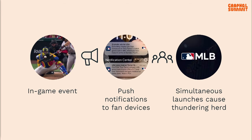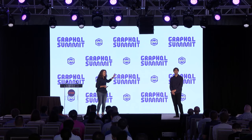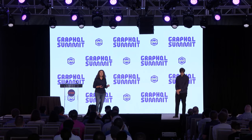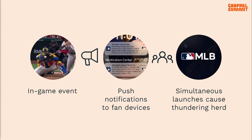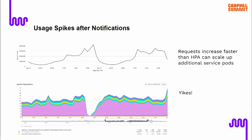We also see a lot of users impacted by in-game events and the push notifications that go out to indicate fans that something big just happened. During the WBC, there was a big moment in the USA-Venezuela game where Trey Turner hit a three-run home run, giving the US team the lead. There was a big push notification and millions of fans went to the app. Unfortunately, all these simultaneous launches caused a thundering herd. You can see requests increased faster than our HPA could scale up to deal with it — the service actually crashed for a minute. It recovered very quickly, but this was a real yikes moment for us.